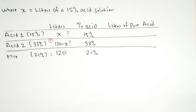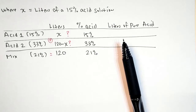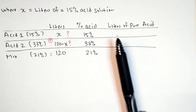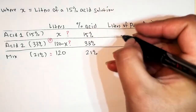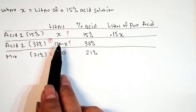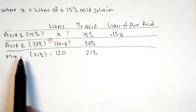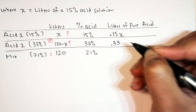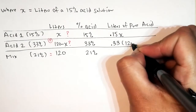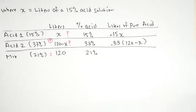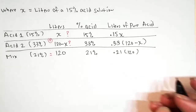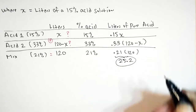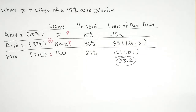Now to wrap up this table — we have all but one column complete. How much pure acid do we have in each one? The first one is 15% acid, so we take 0.15 and multiply it by x liters. How much pure acid in the second one? It's 33% acid, so we take 0.33 and multiply it by (120 minus x) liters. How much pure acid in the mix? It's 21% acid, so we take 0.21 times 120. Let's go ahead and evaluate: the calculator gives us 25.2.